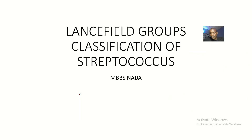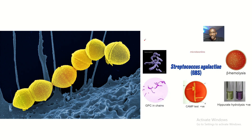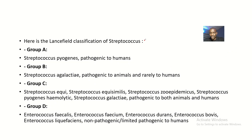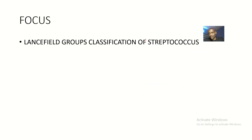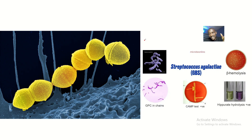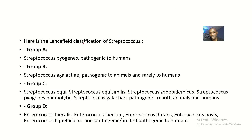We get to look at a major classification of Streptococcus — a classification done by the scientist Lancefield. Ever since, it has been named after him and is called the Lancefield group classifications of Streptococcus. It's self-explanatory: just the groups and examples of Streptococcus that fall under them. Here is the Lancefield classification of Streptococcus.